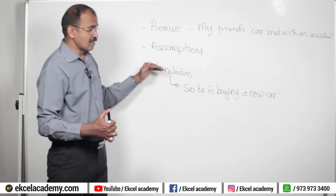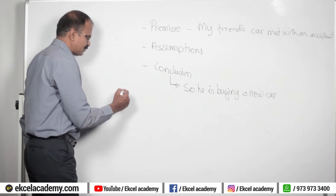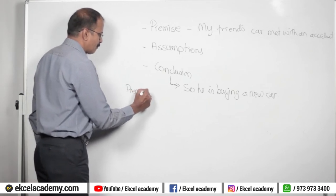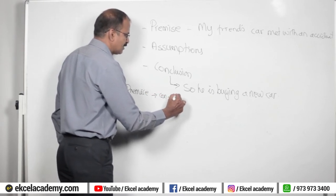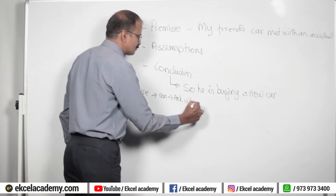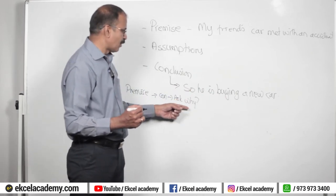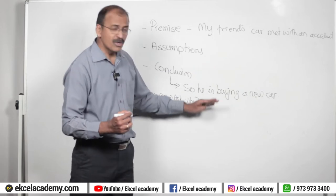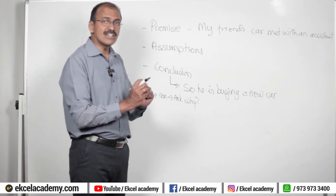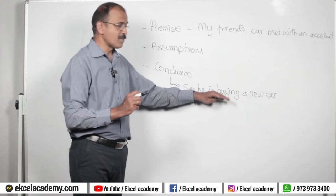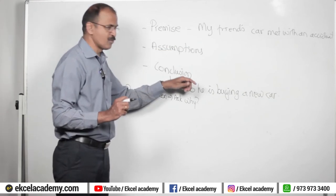To find the premise in your reading comprehension, all you have to do is look at the conclusion and ask 'why.' Look at the conclusion — 'is buying a new car' — just ask why. Why is he buying a new car? Then you look at the options, and the most legitimate, strongest sentence that tells you this could be a reason he is buying a car will be your premise. So now you have a clear understanding of what is a premise and what is a conclusion.